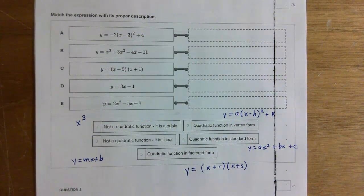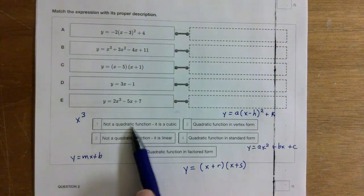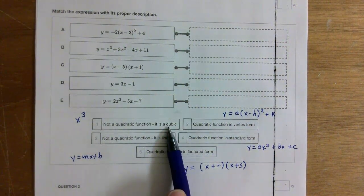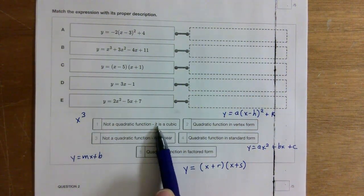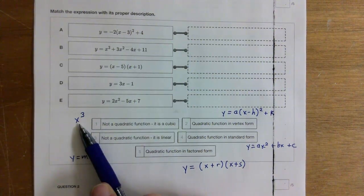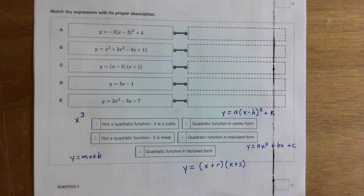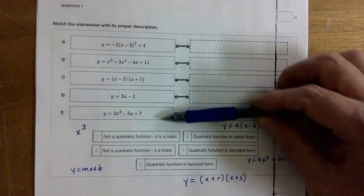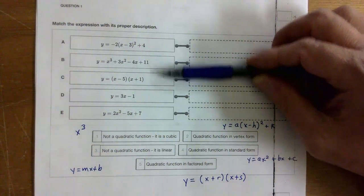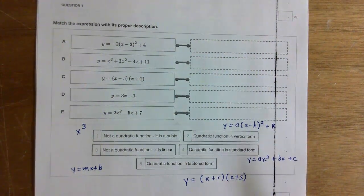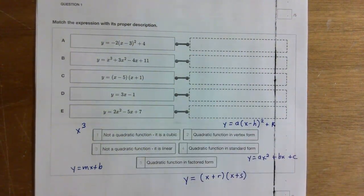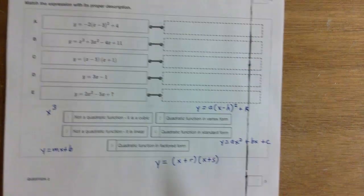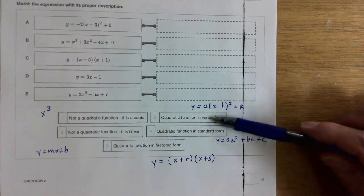Then find the cubic. One of these is not a quadratic at all — it's a cubic. It has an x to the third. Look up here and find the one that's x to the third and drag that one up there. Now you only have two left.